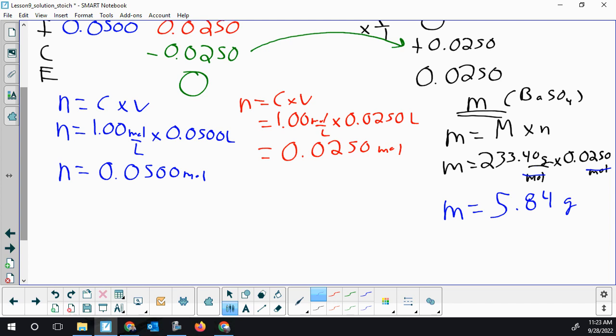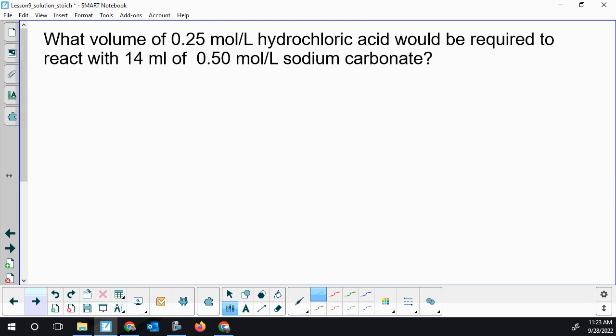Not that different from previous stoic. Our second question will have all the same type of strategies, but we're going to have a little bit more solution stoic - use that concentration as n over V a little bit more than we did in this one. What volume of 0.25 mol/L hydrochloric acid would be required to react with 14 mL of 0.50 mol/L sodium carbonate?